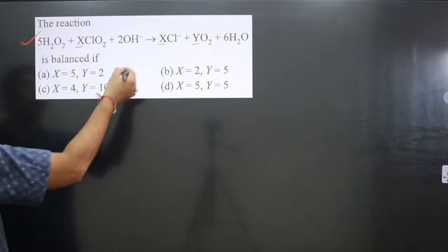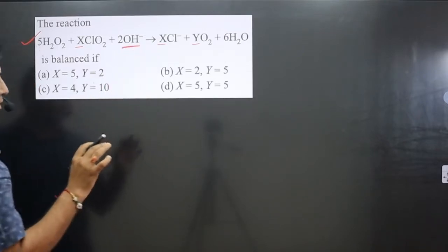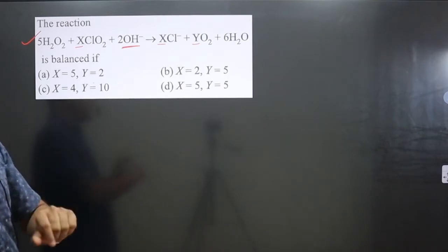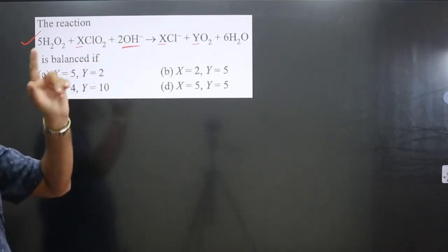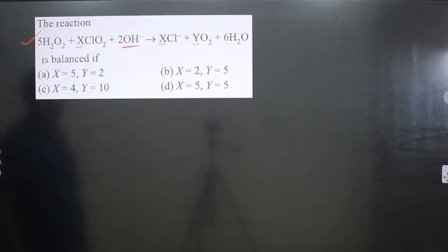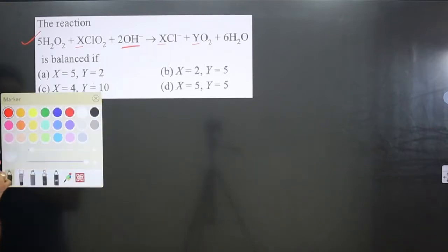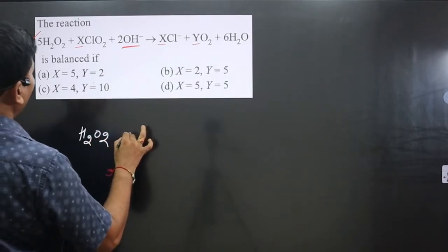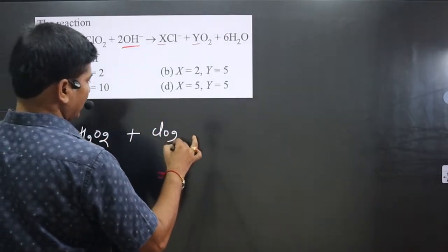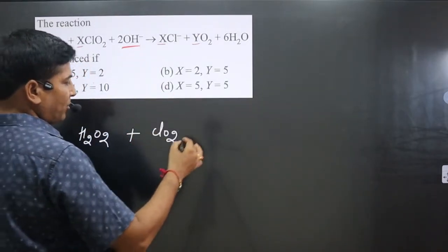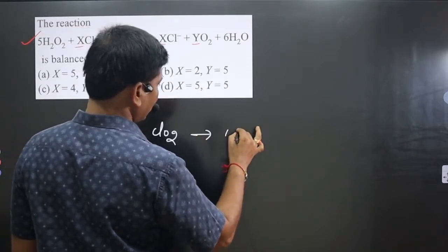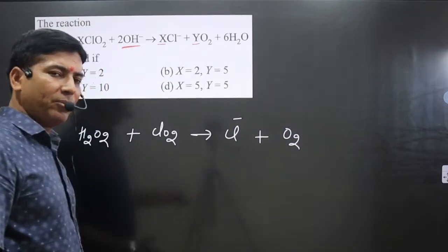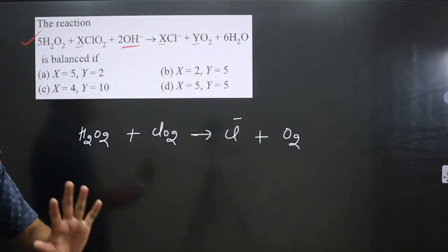Looking at the equation carefully, OH⁻ is given, which means this equation is to be balanced in basic (alkaline) medium. The equation is: H₂O₂ plus ClO₂, with OH⁻ as part of the medium. On the other side we have Cl⁻ and O₂. Water molecules can be balanced later.